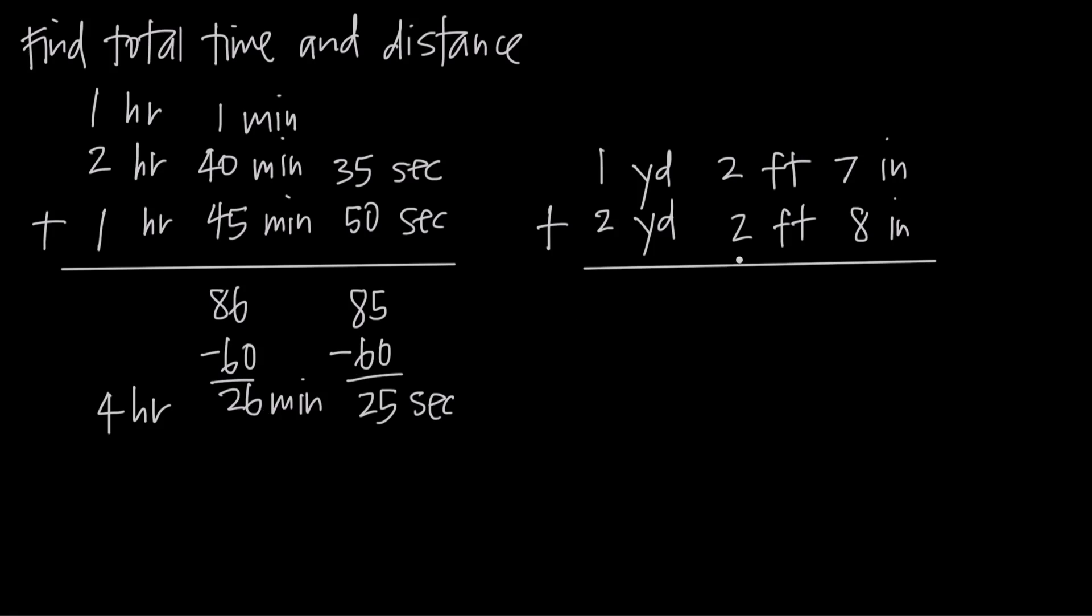Let's look at a similar example with distance. We have 1 yard 2 feet 7 inches plus 2 yards 2 feet 8 inches. What's the total distance? We start on the right with inches: 7 plus 8 is 15 inches.